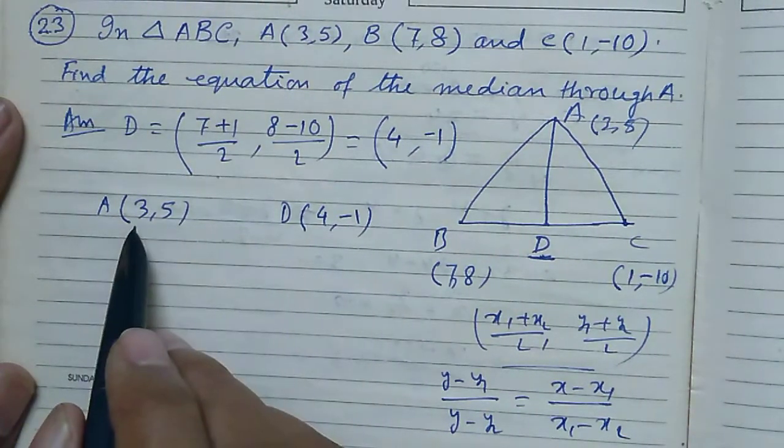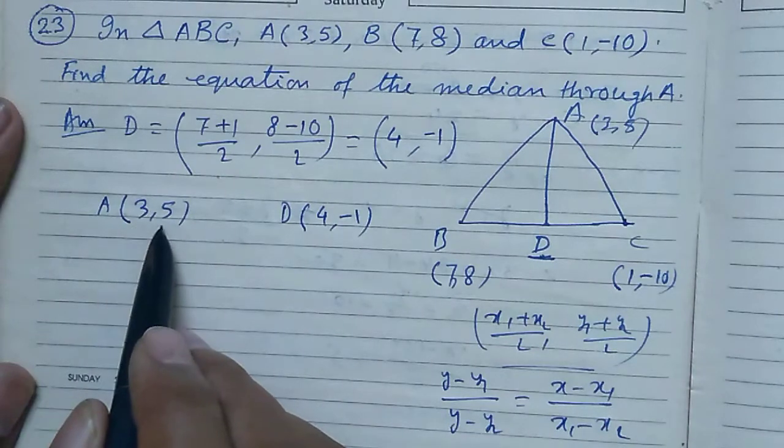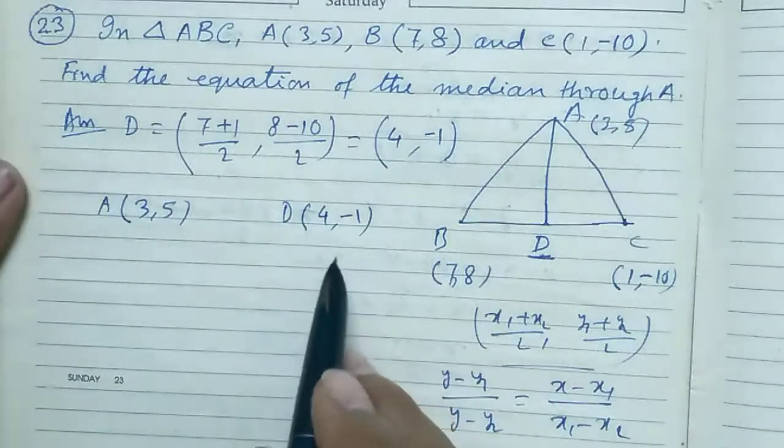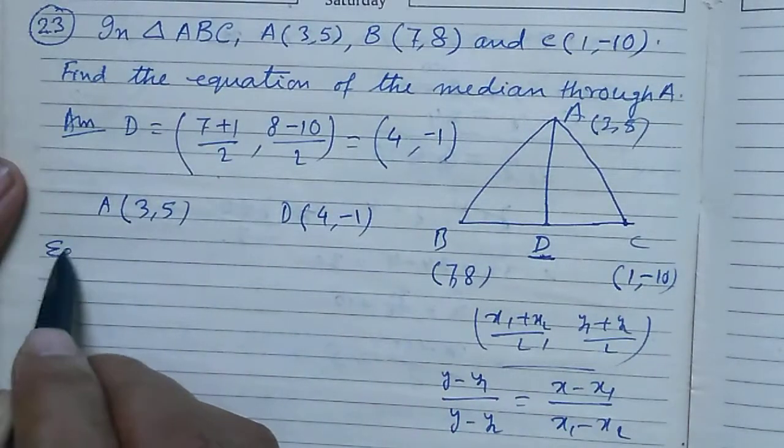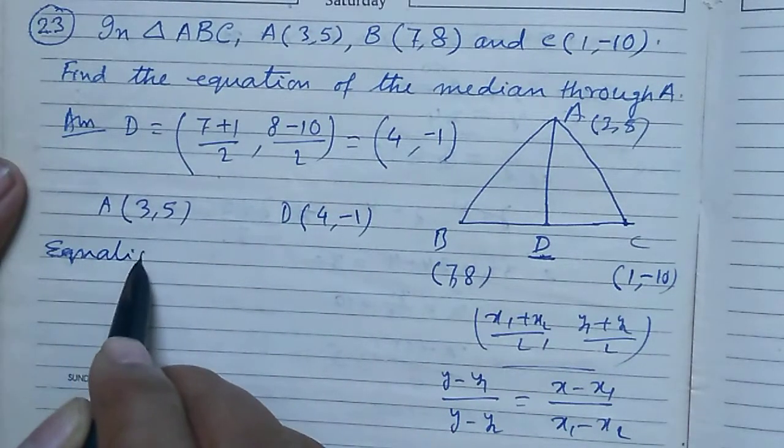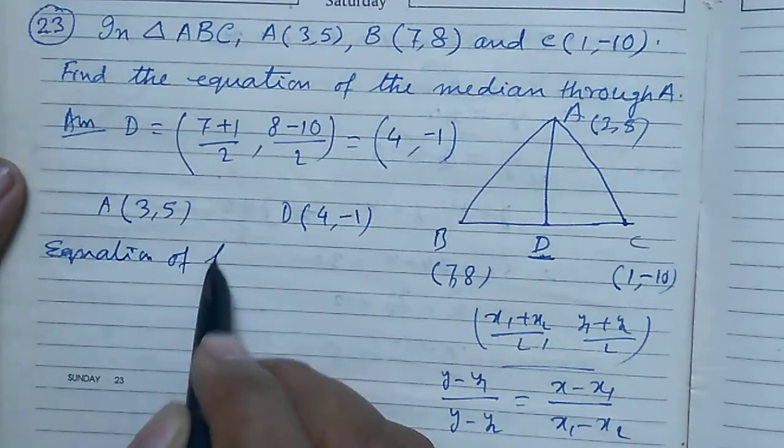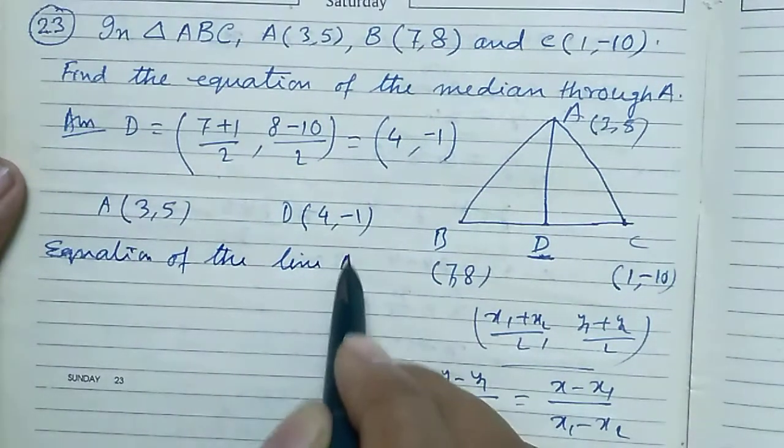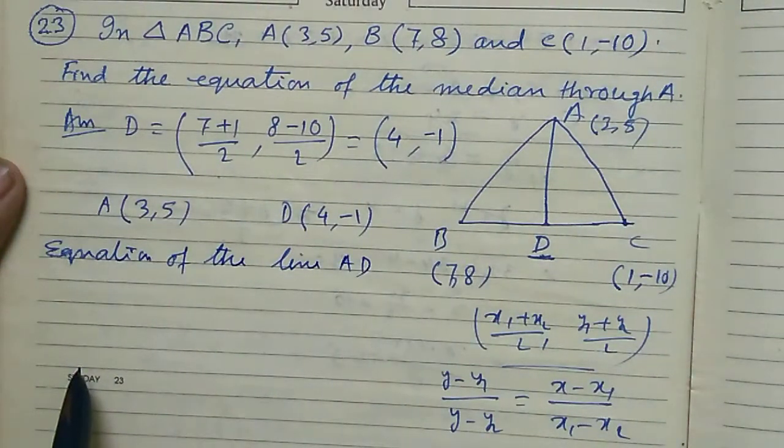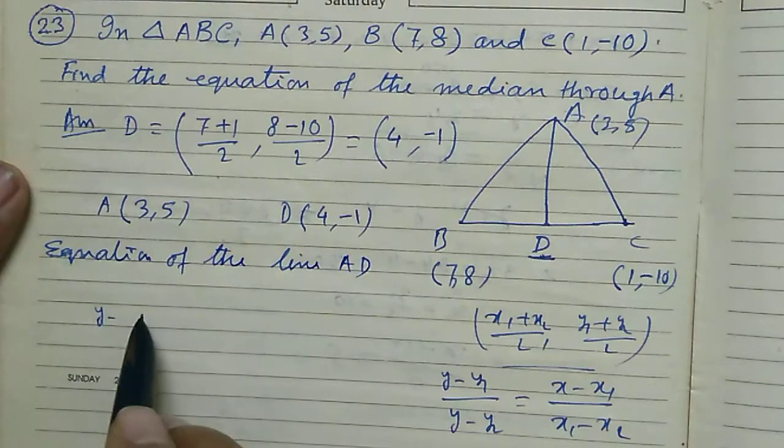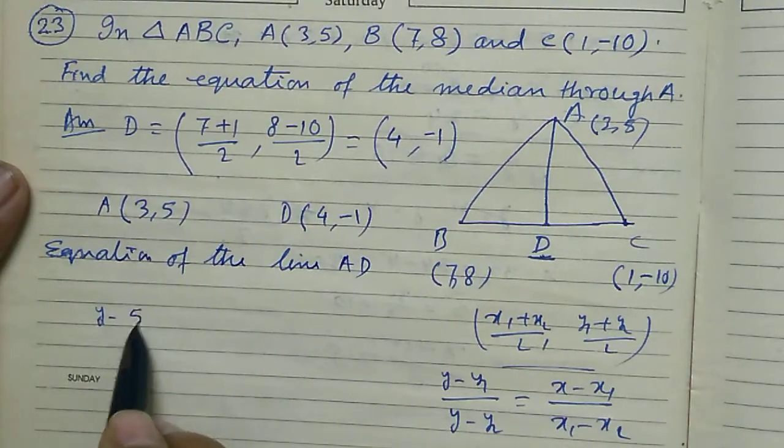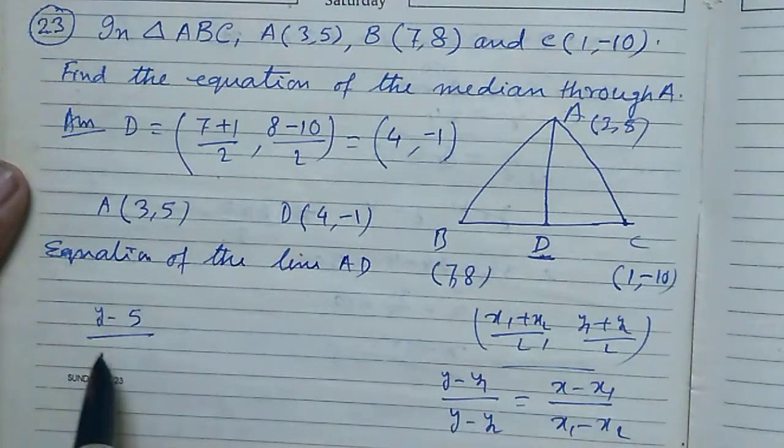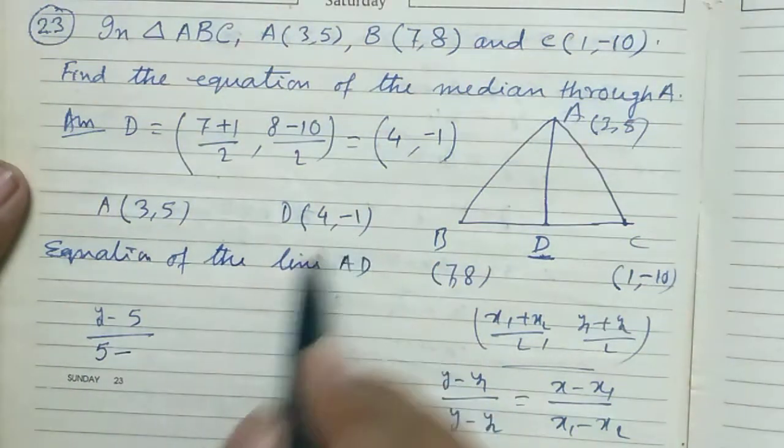Here, this is X1, Y1, and this is X2, Y2. Now the equation of the line AD. Let's see: Y minus Y1 by Y1 minus Y2, that's Y minus 5 by 5 minus minus 1.